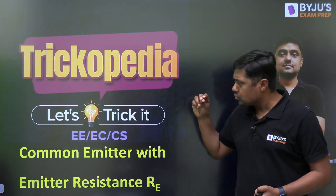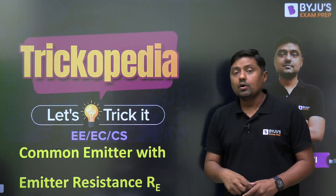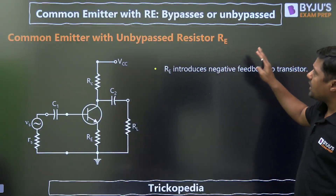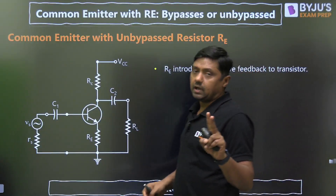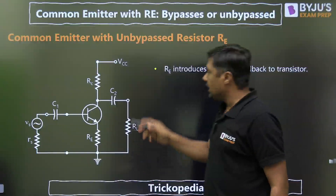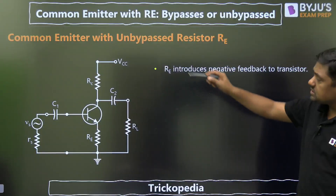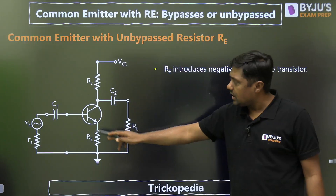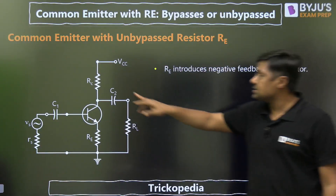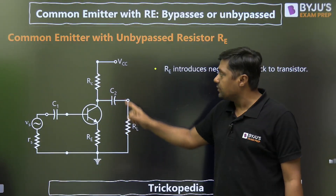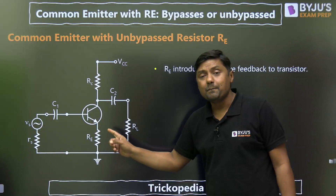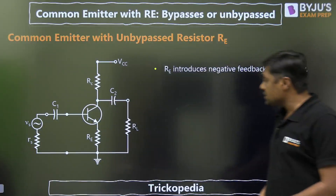Now, how to solve this question very quickly. First of all, for common emitter with unbypassed resistance RE, there are two diagrams — one unbypassed, one bypassed — as given in the figure. This is RC, this is RL, this is RE, C1 and RS we are connecting. Sometimes RC is connected and RL is not given; sometimes RC and RL both are connected, but RE is unbypassed.